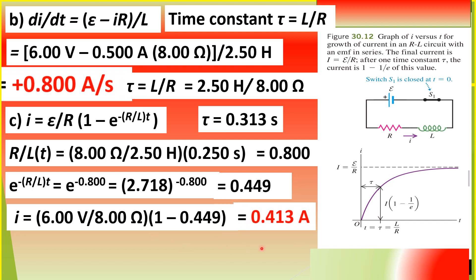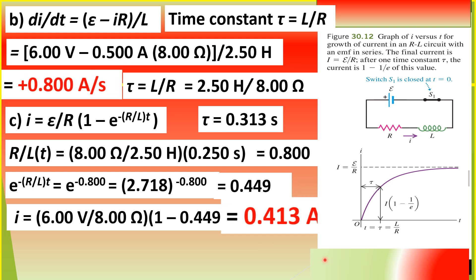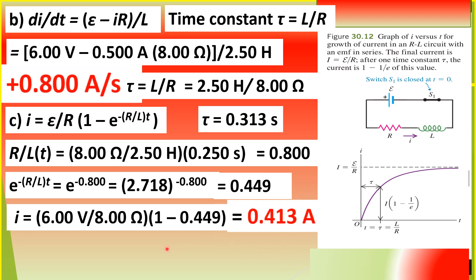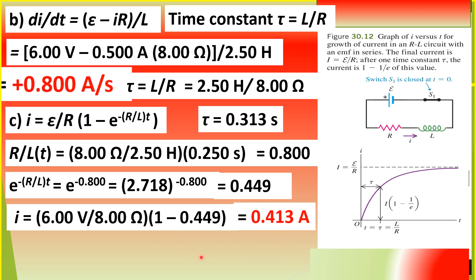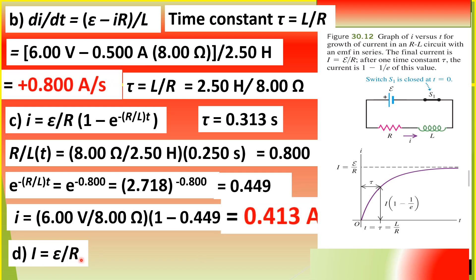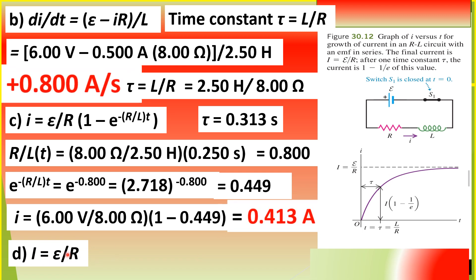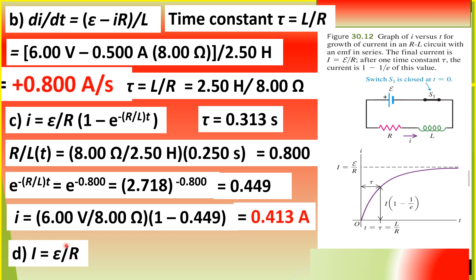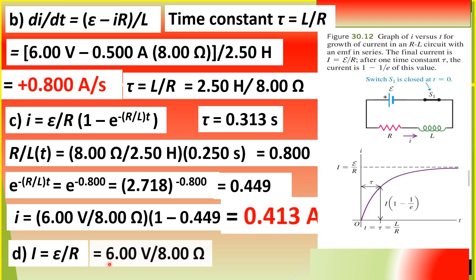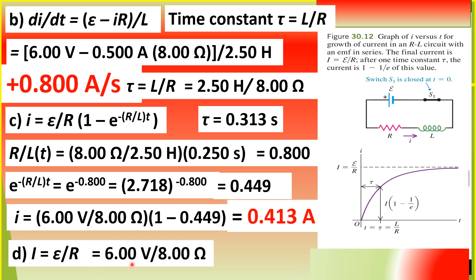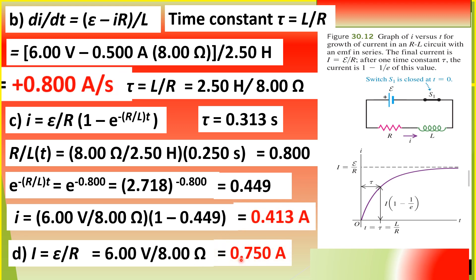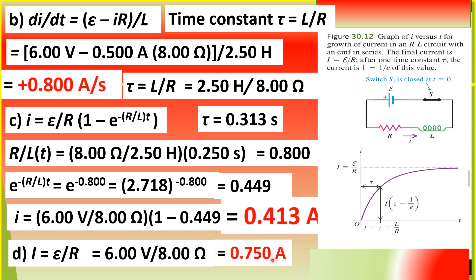For question D, we are simply asked for the steady current, big I, which by Ohm's law is epsilon over R. So we get 6.00 volts divided by 8.00 ohms. The value for the steady current is 0.750 amperes.